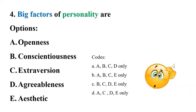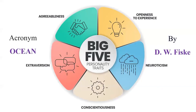Question four: Big five factors of personality. The given options are: A) openness, B) conscientiousness, C) extraversion, D) agreeableness, E) aesthetic. The given codes are: code A — capital A, B, C, D only; code B — capital A, B, C, E only; code C — capital B, C, D, E only.